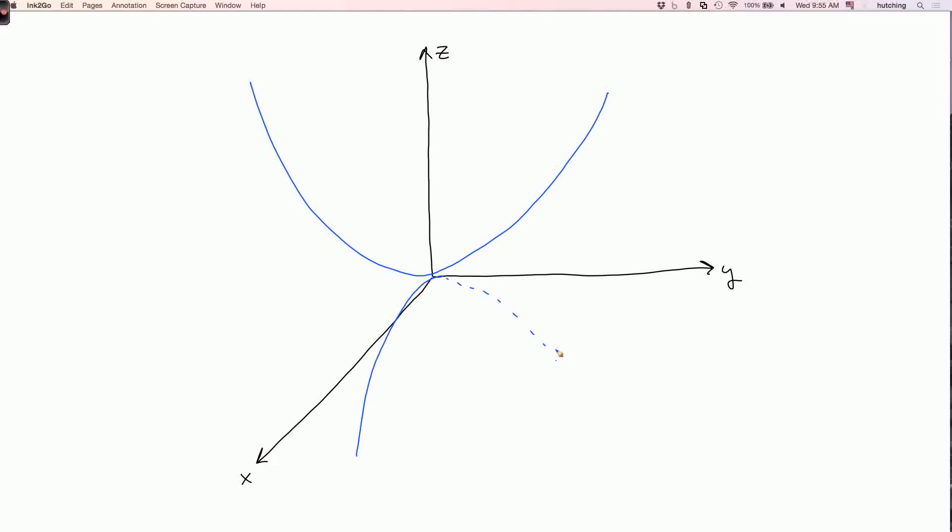And also, the intersection with a horizontal plane above the xz plane is a hyperbola which intersects the y axis. So that looks like this. And now we can sort of connect this together to get an idea of what the whole surface looks like.